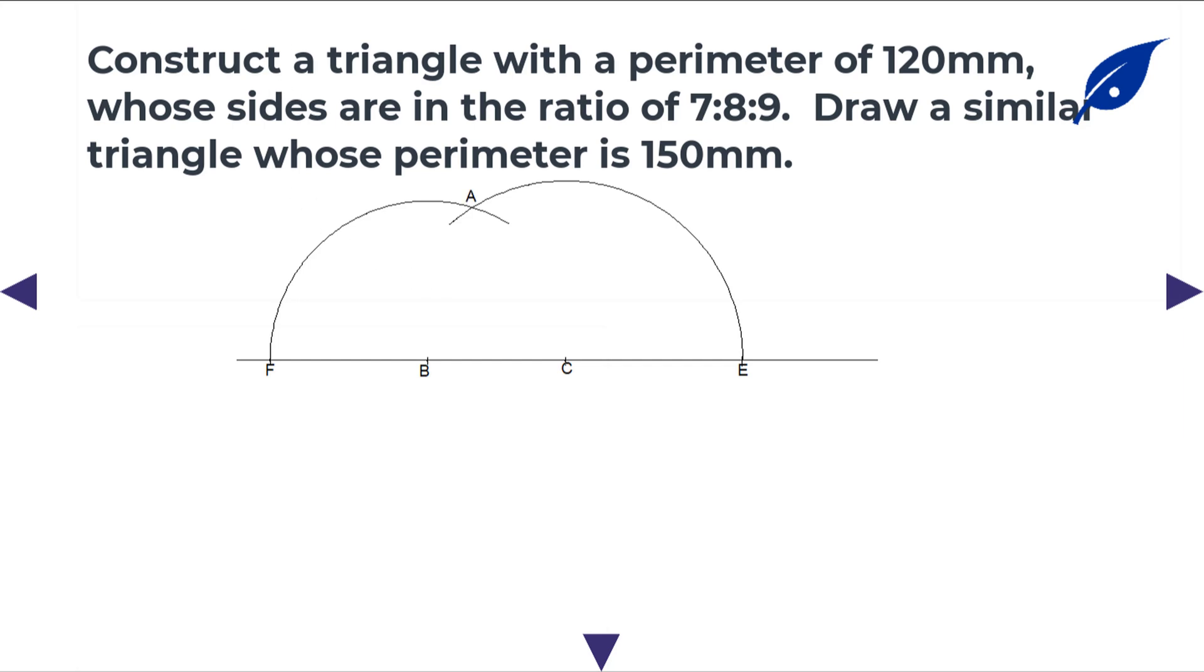At point A, connect it to B and connect from A to C, which gives us the required triangle. This means the side AB is 40 millimeters, BC is 35 millimeters, and AC is 45 millimeters.